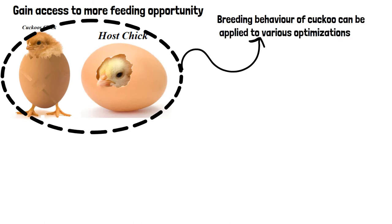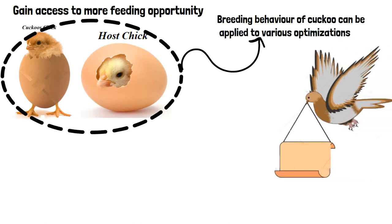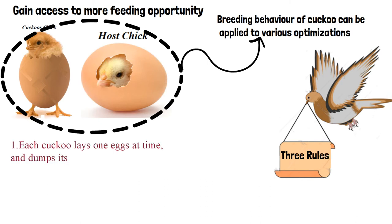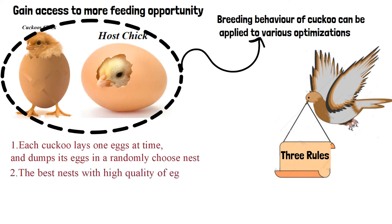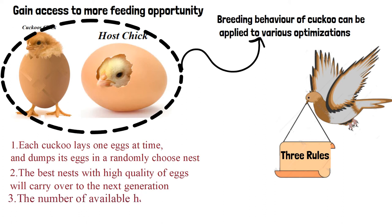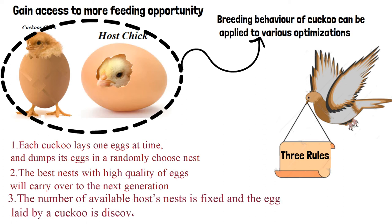Cuckoo search algorithm is based on three rules: each cuckoo lays one egg at a time and dumps its egg in a randomly chosen nest. The best nests with high quality eggs will carry over to the next generation. The number of available host nests is fixed, and the egg laid by a cuckoo is discovered by the host bird with a certain probability.